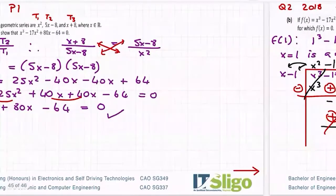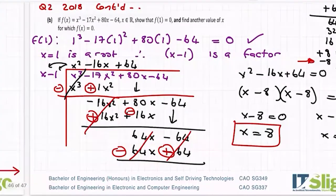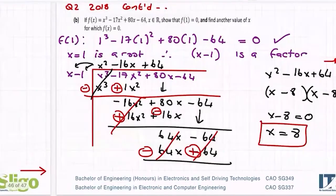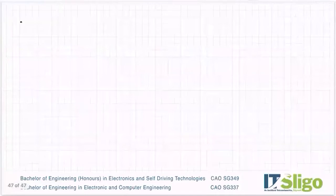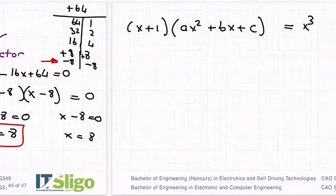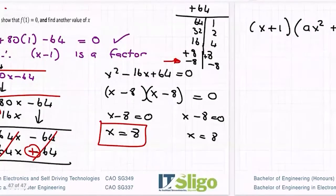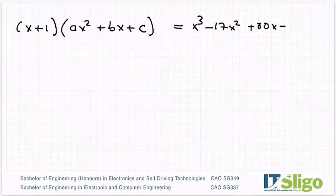So that's an algebra-type question married with a geometric sequence. What is another way I could have done it? Well, of course you could have used equating the coefficients. We have x cubed minus 17x squared plus 80x minus 64, and if you multiply out the factor by a quadratic and equate the coefficients, you should get the same thing.